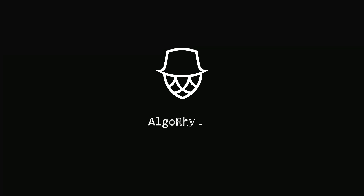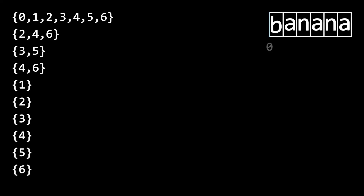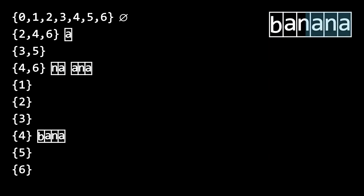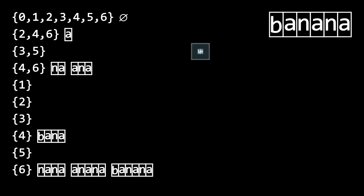Welcome to algorithm, I'm Mike. There is a string. For every substring, we define that the endPath is the set of positions where the substring occurs. An equal endPath class is the set of substrings with the same endPath.